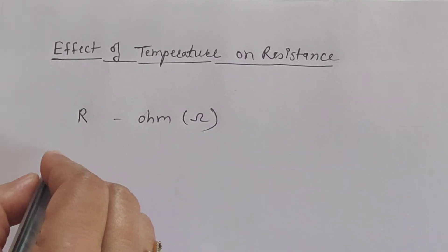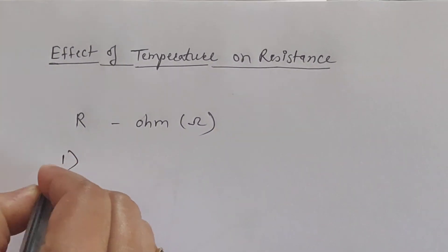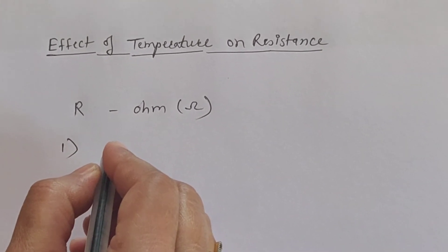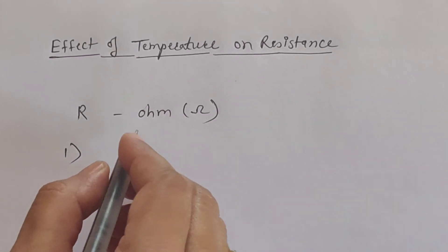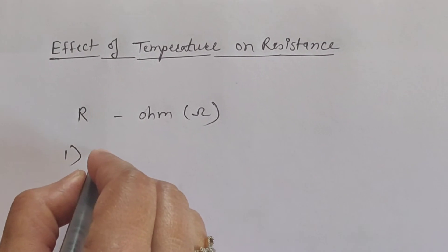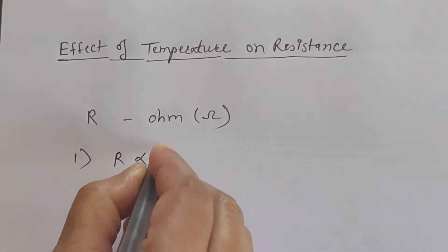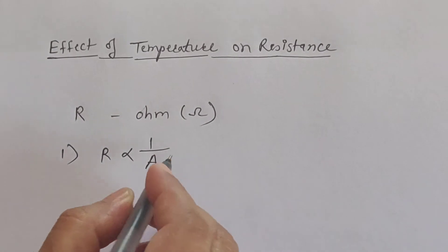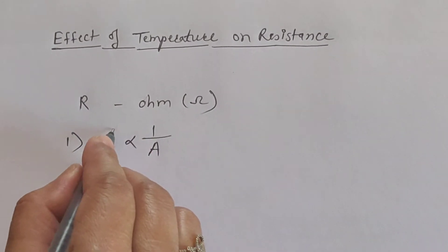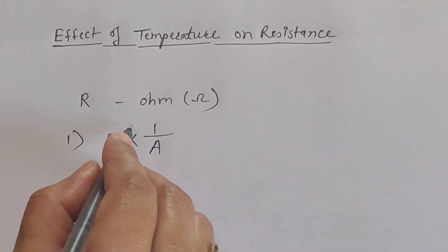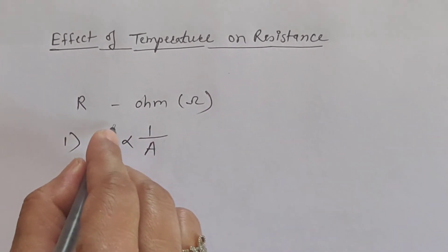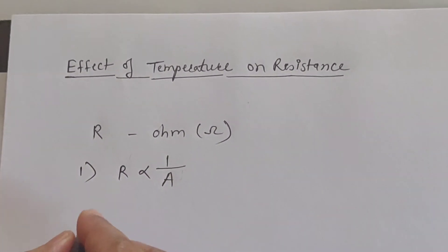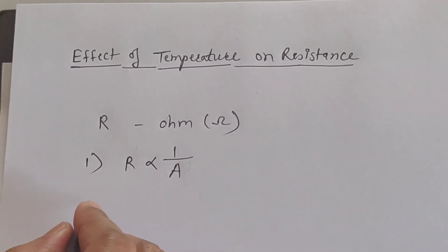This resistance depends on four factors. The first one is area of cross-section of the conductor. Resistance is inversely proportional to area of cross-section — as area increases, resistance decreases, and as area decreases, resistance increases.